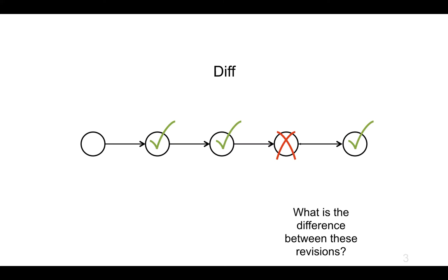What is the difference between these last two revisions? Remembering that source code is basically a whole bunch of text files, the question we're asking is: what's different between these two snapshots of a directory full of text files?